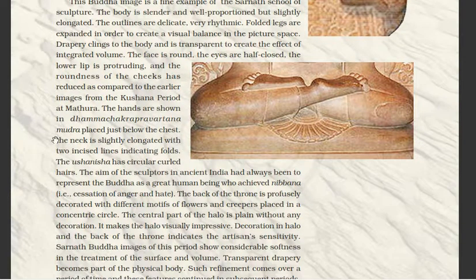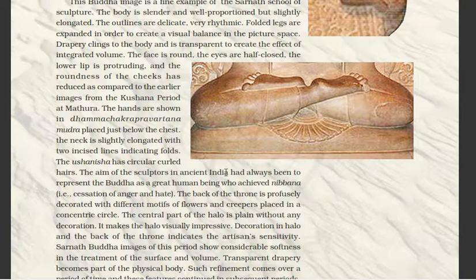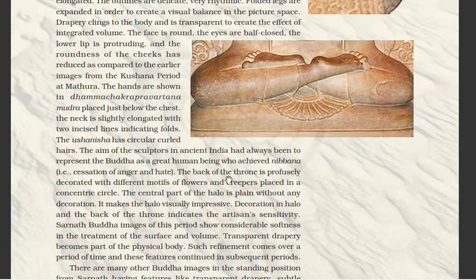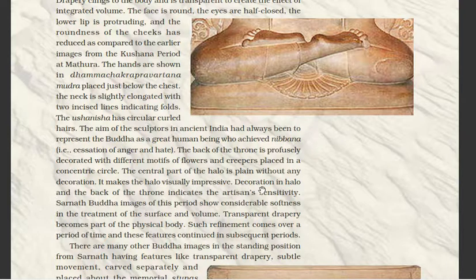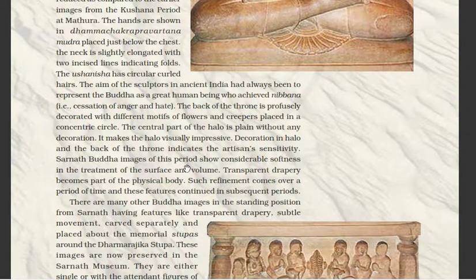The hands are shown in the Dhamma Chakra Parivartana mudra, placed just below the chest. The neck is slightly elongated with two incised lines indicating folds. The Ushanisha has circular curled hairs. The aim of sculptors in ancient India was always to represent the Buddha as a great human being who achieved Nibbana — the cessation of anger and hate. The back of the throne is profusely decorated with motifs of flowers and creepers placed in concentric circles, while the central part of the halo is plain without decoration. Sarnath Buddha images show considerable softness in the treatment of surface and volume, and the transparent drapery becomes part of the physical body.